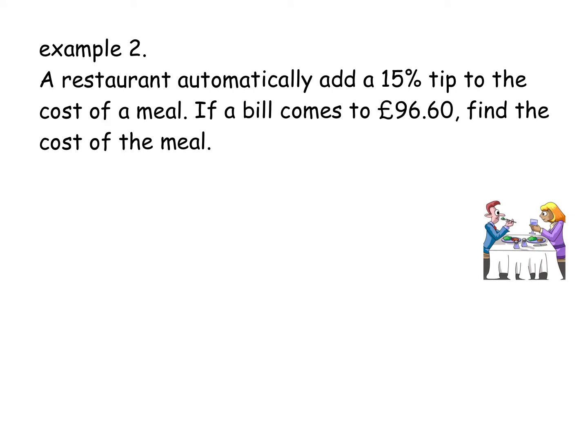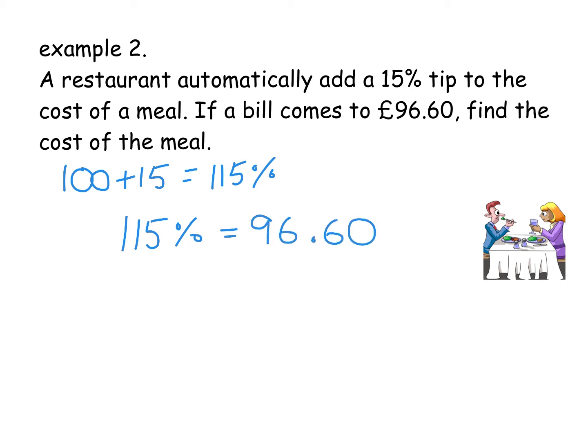Next question. So if you ever go to a posh restaurant, sometimes they add a tip onto your meal already — they'll call it a service charge. This restaurant is adding on a 15% tip to the cost of a meal. If the bill comes to £96.60, you have to find the cost of what the meal was originally. The original amount was 100%, and we added on 15%, so this is 115%. Your first mark is for writing down the statement: 115% is the equivalent of £96.60.